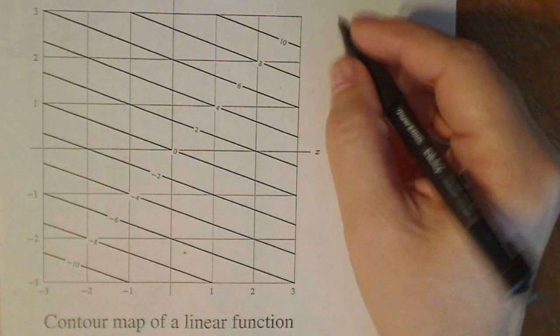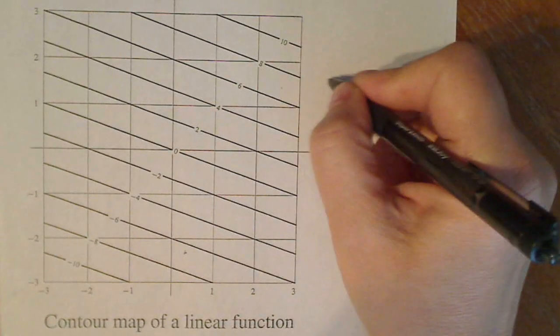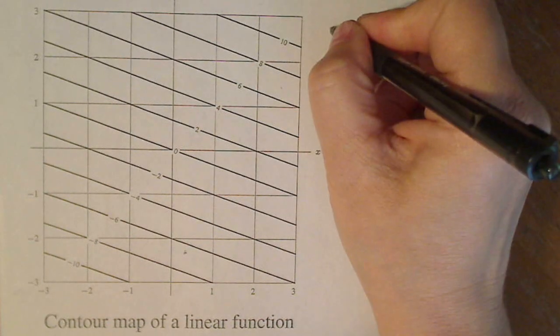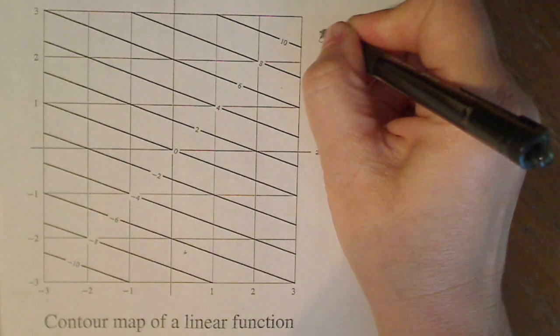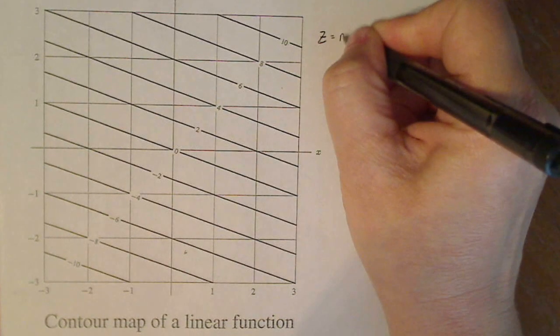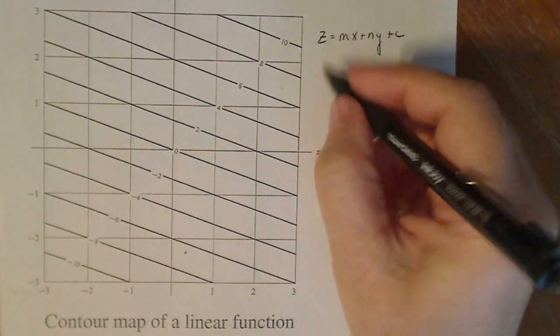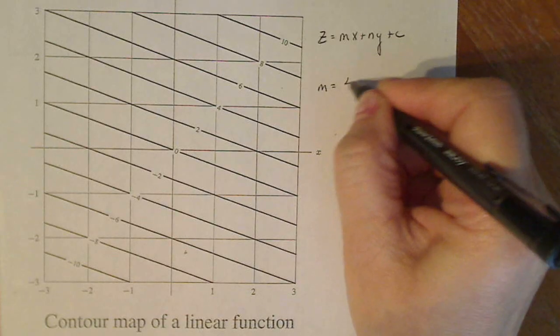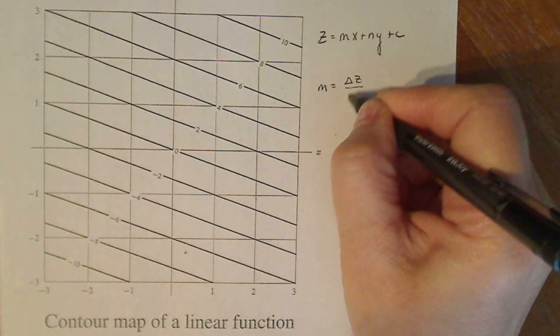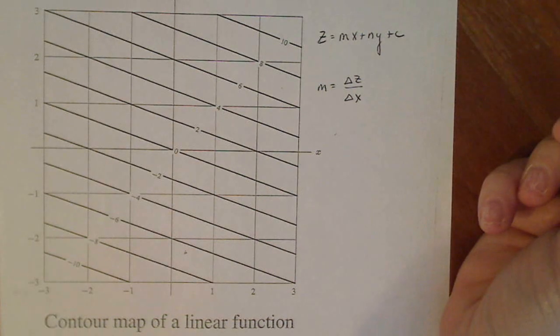So how do I do that? I know that the general form of a plane looks like Z equals MX plus NY plus C where M is equal to the change in output over the change in input in the X direction.